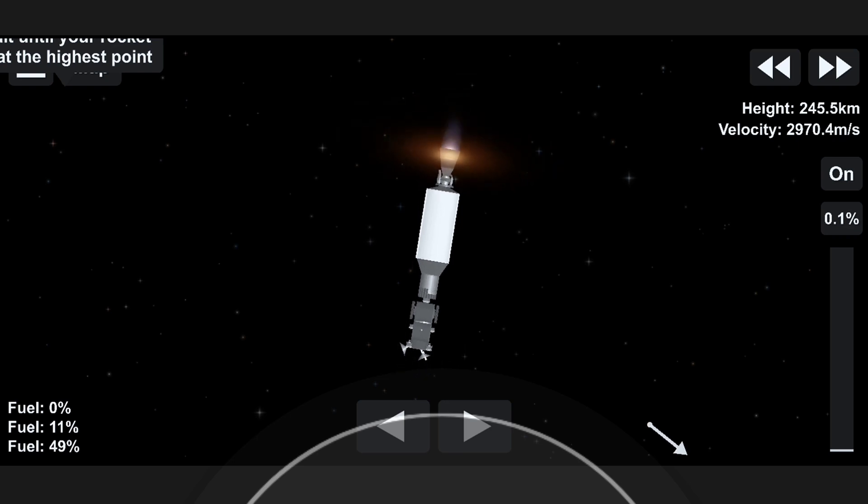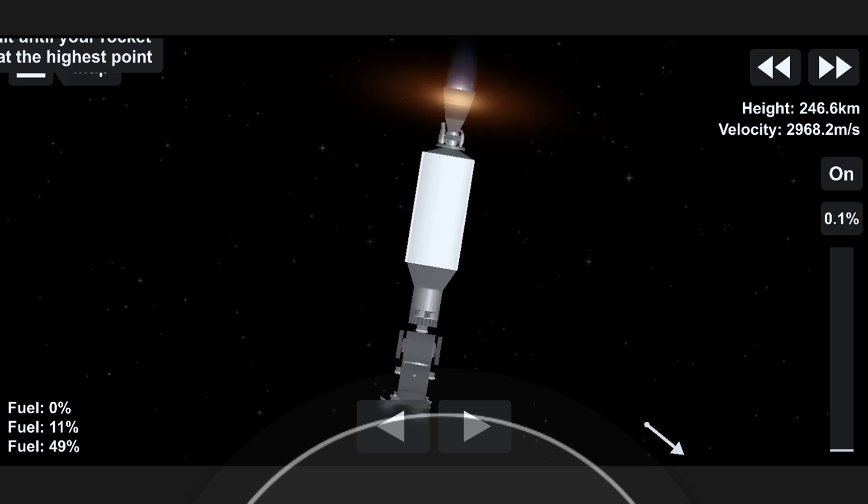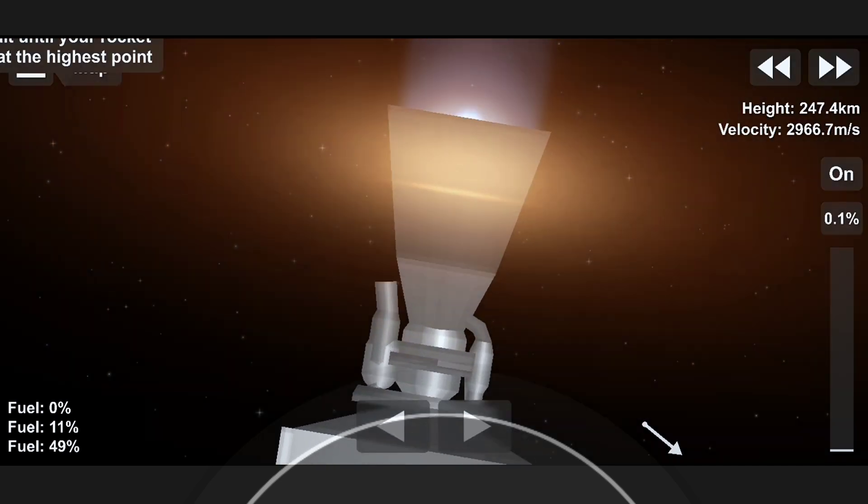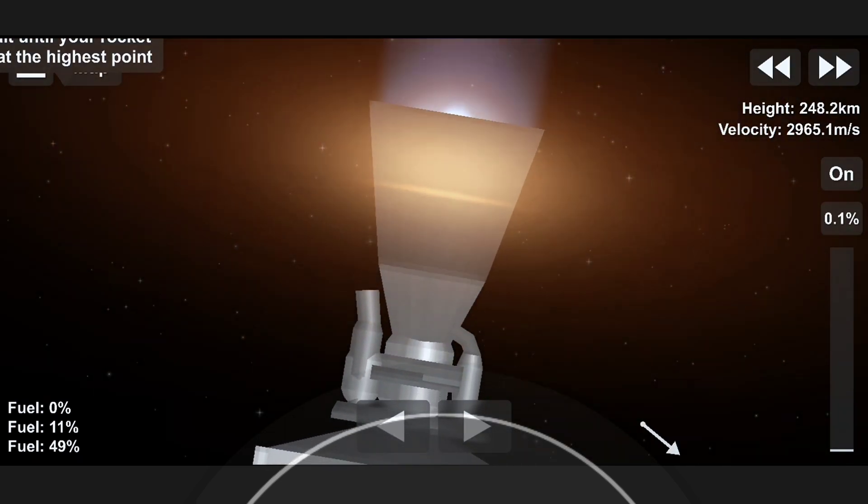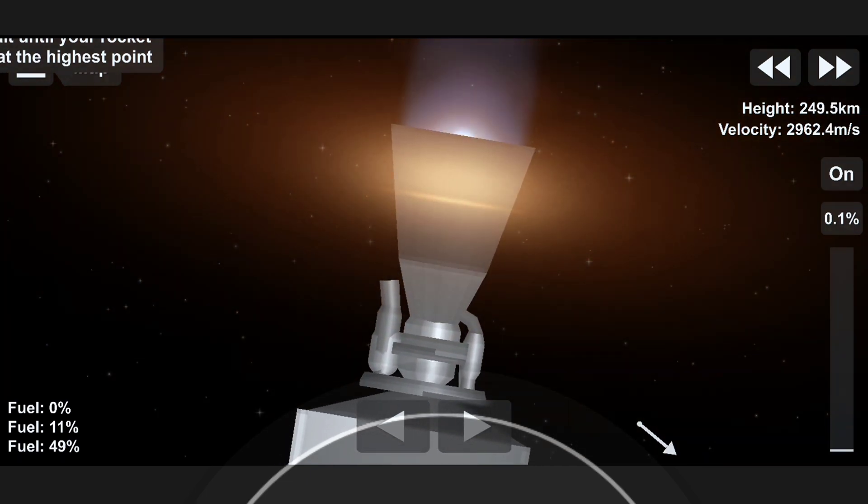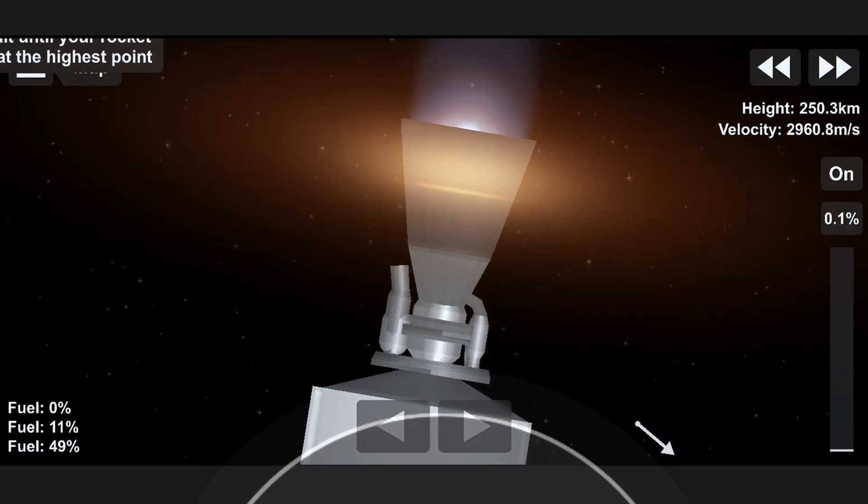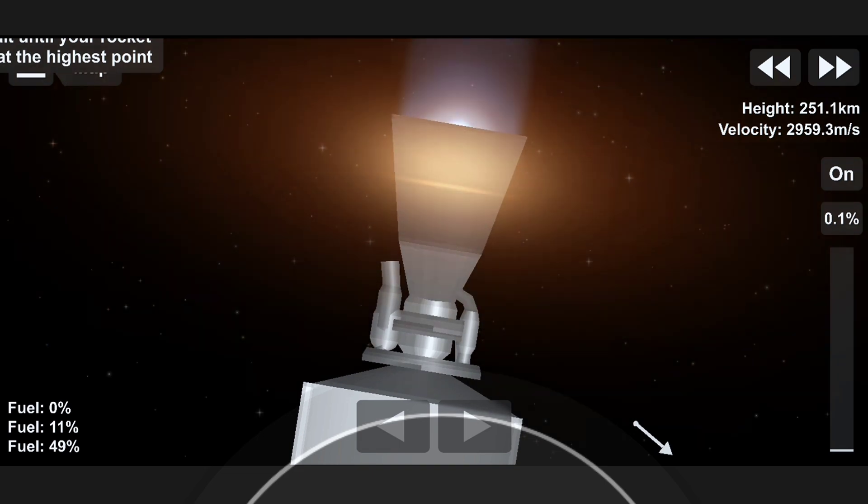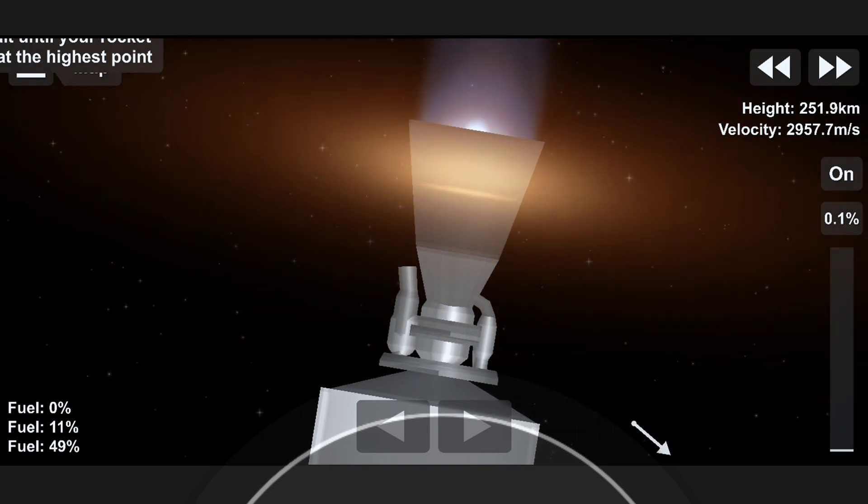And while we're waiting for that period, some fun facts. The engine you see on screen can produce over 200,000 pounds of thrust. The second stage is currently traveling at over 20,000 kilometers an hour. At those speeds, you could travel from Los Angeles to New York in just 12 minutes. Very, very fast.